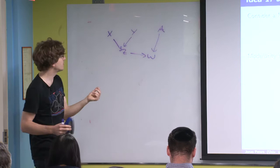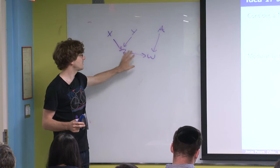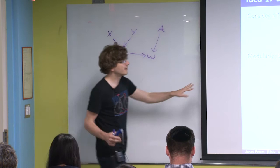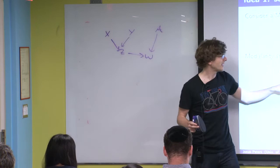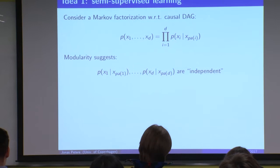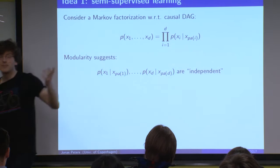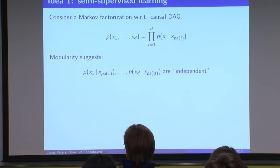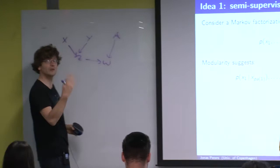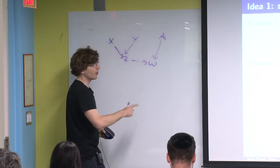If you play with this a bit and think about a system evolving over time where maybe this mechanism changes a bit, if modularity holds then this assumption suggests that these components are somewhat independent. To make it rigorous — whenever you know how the structural equation looks for w, this doesn't tell you much about the structural equation for z. All these components are independent.